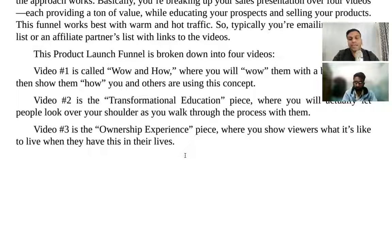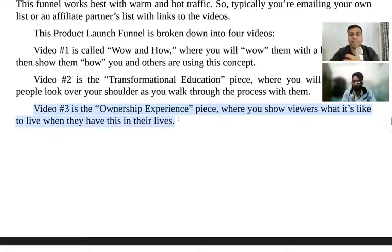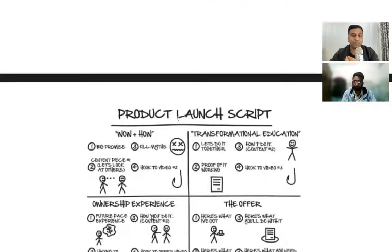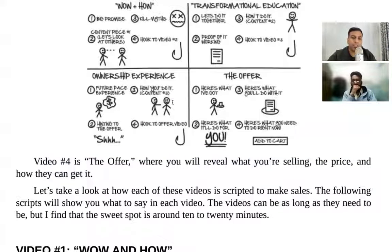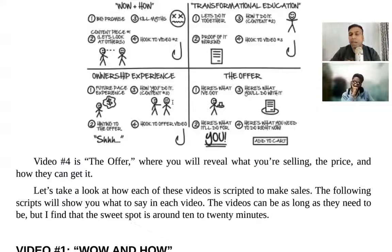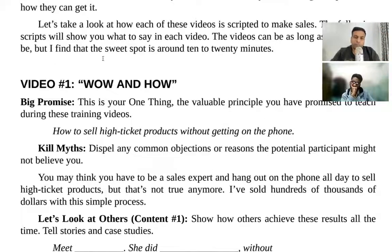In day two, you introduce your piece of content related to the product. In day three, we have the ownership experience piece, where you show viewers what it's like to live with that transformation. In video four, we reveal the offer — what you're selling, the price, and how they can get it. Some people do this over four days, five days, or even seven days.